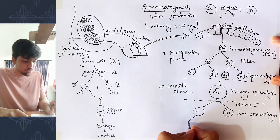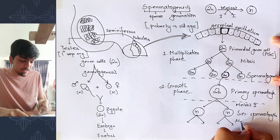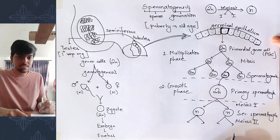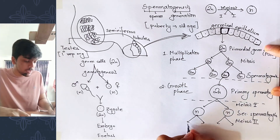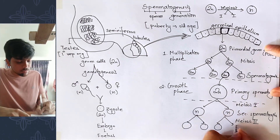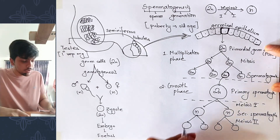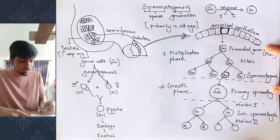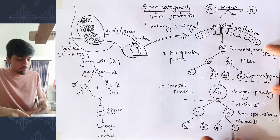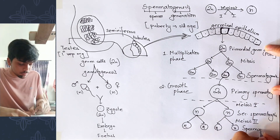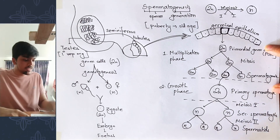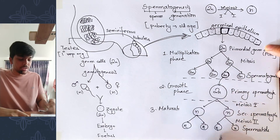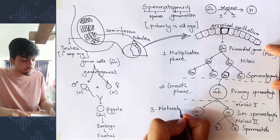Next, meiosis II takes place. Meiosis II is an equational division, similar to mitosis — the number of chromosomes does not change. From one secondary spermatocyte, two spermatids are formed; from both secondary spermatocytes, a total of four spermatids are formed. This phase is the maturation phase, where the primary spermatocyte has matured into haploid spermatids that give rise to sperm.